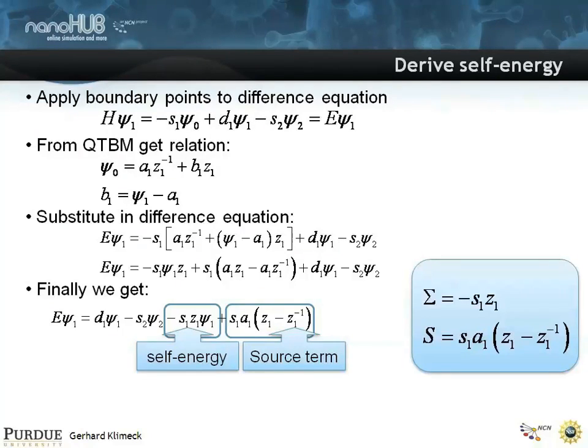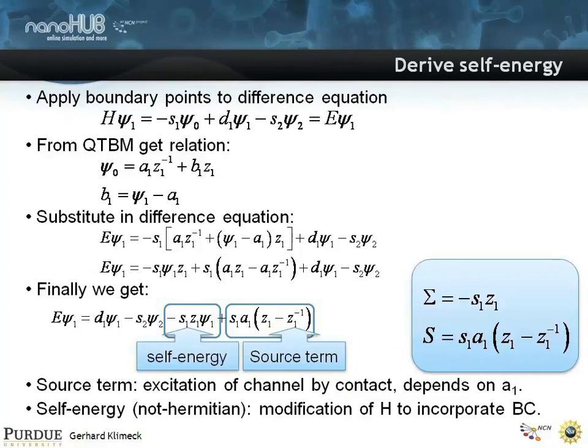And you have a self-energy that sits on the diagonal, and the source term. So, you can identify these self-energies and these source terms. And you get a modification of the non-Hermitian-Hamiltonian to incorporate these boundary conditions.